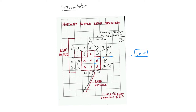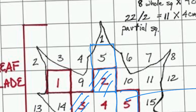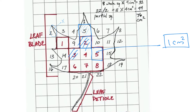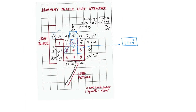Whatever squares are completely inside, we count them as one. If a square is partially inside and more than 50% is within the shape, we count it as one. If less than 50% is inside, we neglect it. We then add all the counted squares to get the total area. But here we know there is some approximation — we are not getting an exact value, only an approximate one.